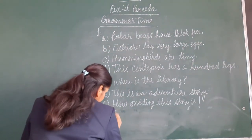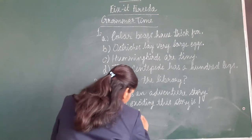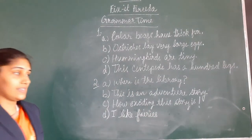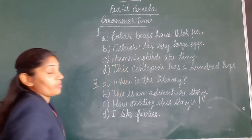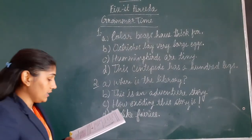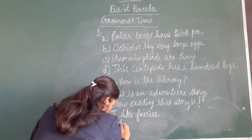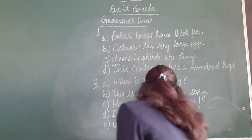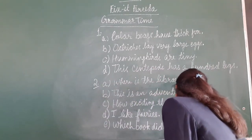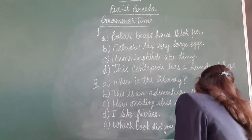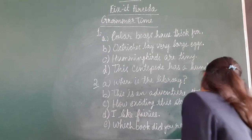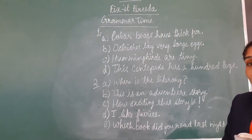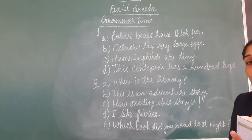Now let us come to part D: 'I like families.' This statement also tells something, so we will put a full stop. Part E: 'Which book did you read last night?' Here we are asking a question. So we will put a question mark at the end.